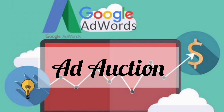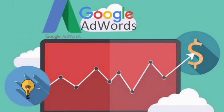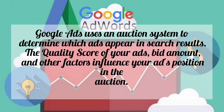Ad auction: Google Ads uses an ad auction system to determine which ads appear in search results. The quality score of your ads, bid amount, and other factors influence your ad's position in the auction.